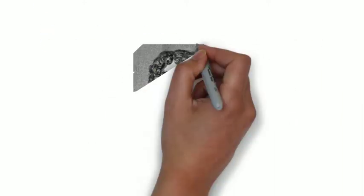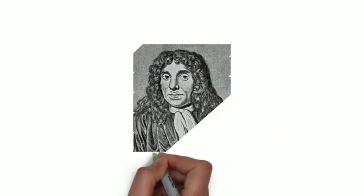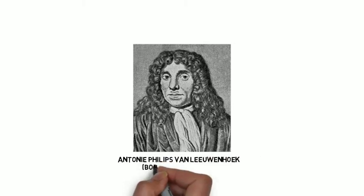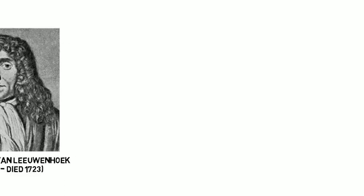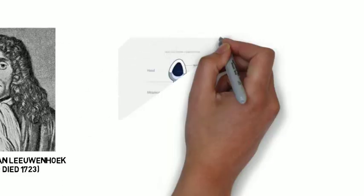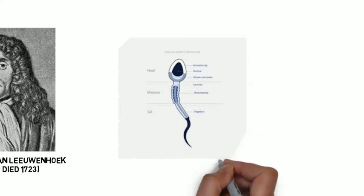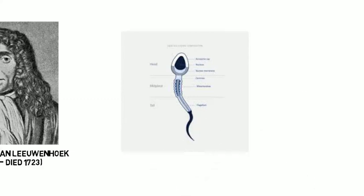In 1677, the Dutch businessman and scientist Antony Philips van Leeuwenhoek, born 1632, died 1723, was the first scientist who observed sperm using his personally developed compound microscope. He imagined that each sperm represents a complete small-scale human.